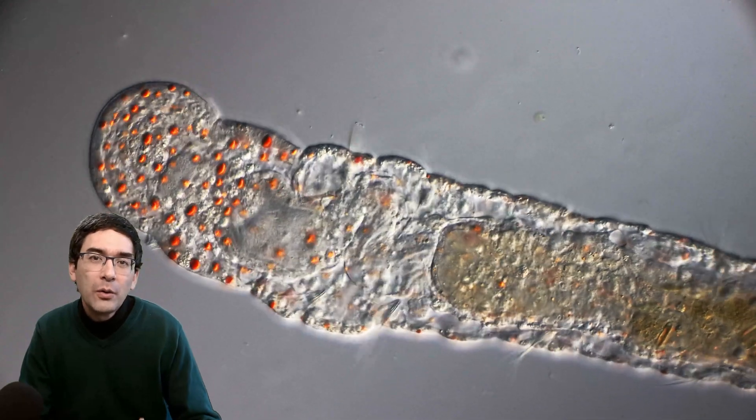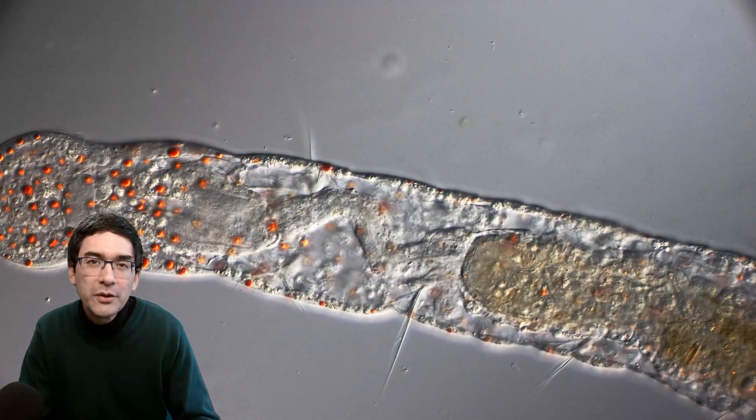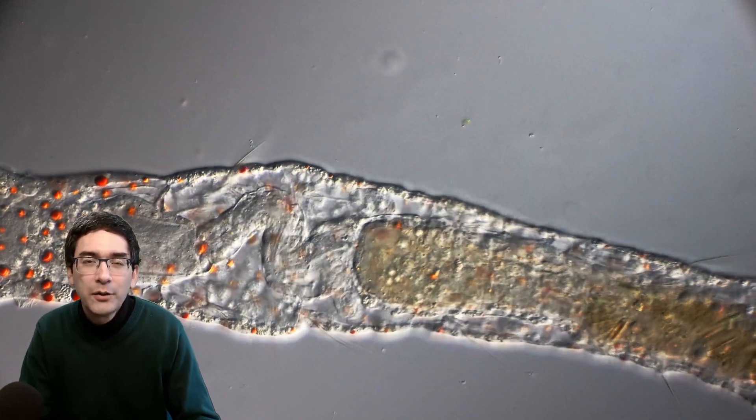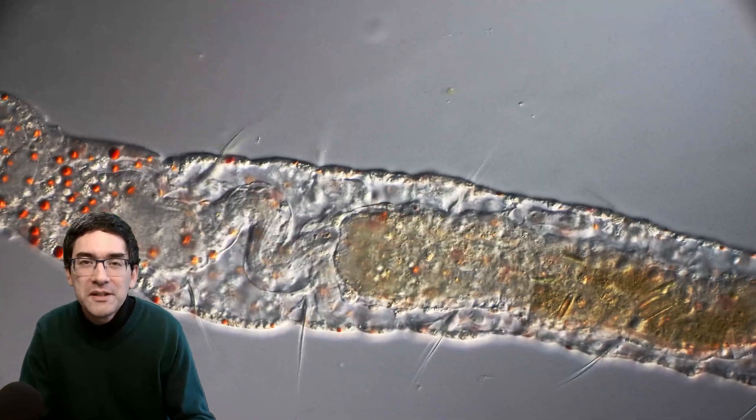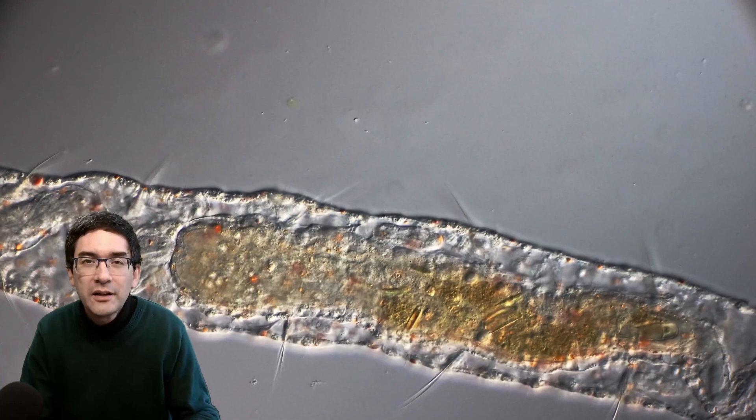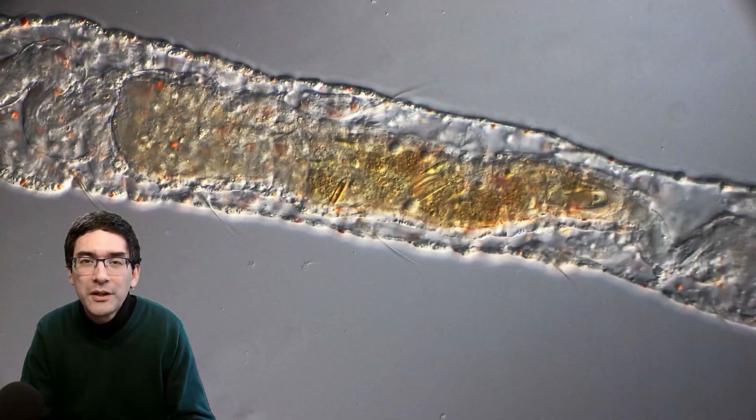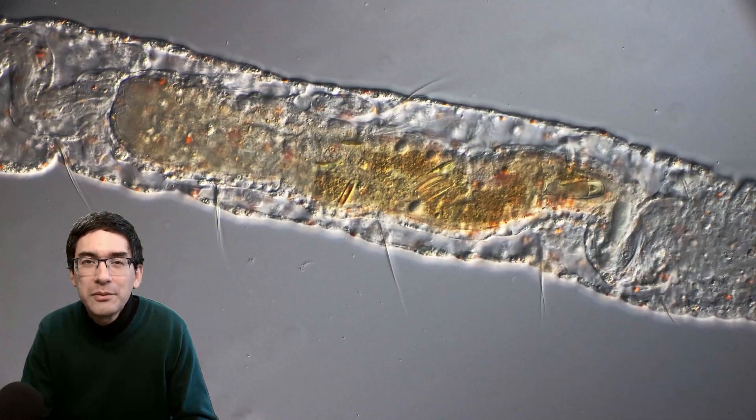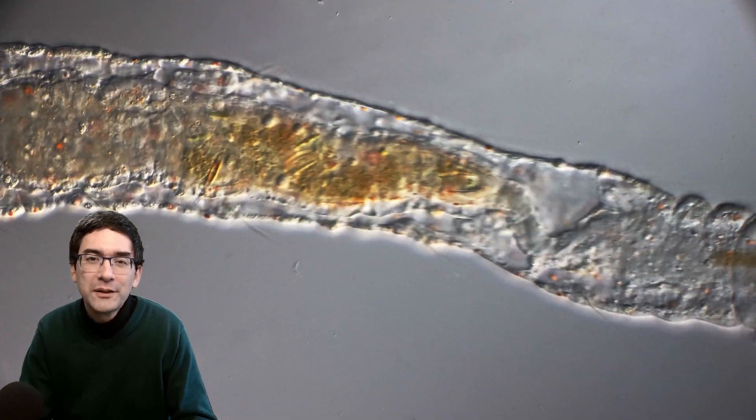Those oil droplets and where you can find them might also be used to identify the worm. Some species have them more on the head, others have them more scattered throughout the body, so those oil globules can be used to characterize different types of these worms.